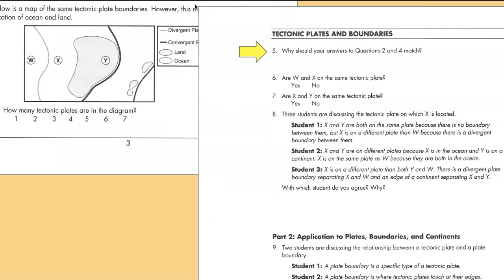Why should your answer to question two and four match? Because a single tectonic plate can contain both ocean and land, and in this case they're not separated by a plate boundary.